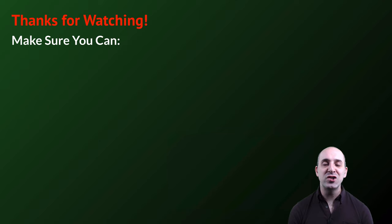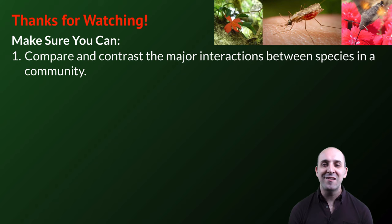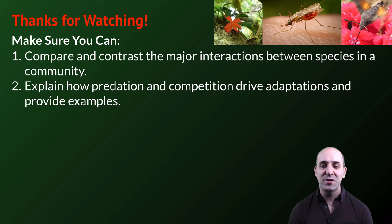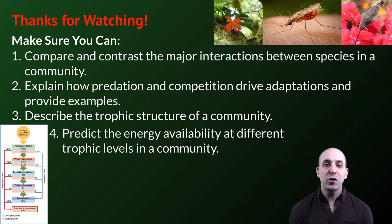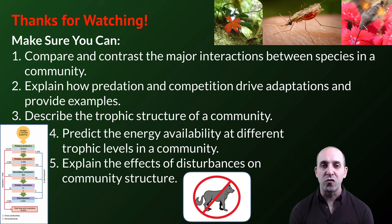Thanks so much for watching our discussion on communities. Make sure you can do the following things: compare and contrast the major interactions between species in a community; explain how predation and competition drive adaptations and provide examples of those adaptations; describe the trophic structure of a community; predict the energy availability at different trophic levels; and explain the effects of disturbances on community structure. If you can do those things, you're doing great. If not, that's okay too — take a moment and write down any questions that you have so that you can get the answers that you need. Thanks again for watching. Have a great day.